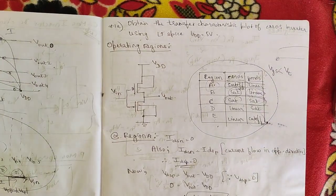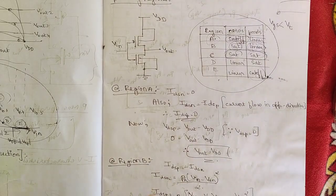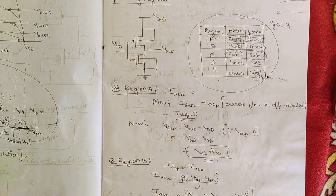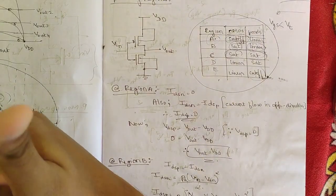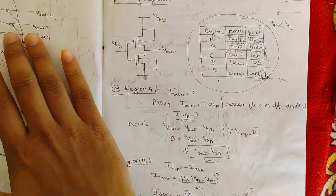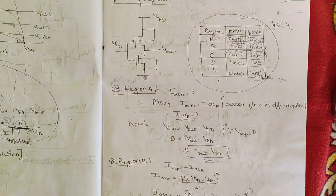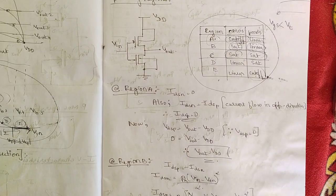In the upcoming video I will go in depth with each region and discuss the set of equations for all five regions of operation, which will lead to one final conclusion from this plot. Please like, share, and subscribe to support us. We regularly upload videos on VLSI design and testing, embedded systems, digital image processing, and other subjects.